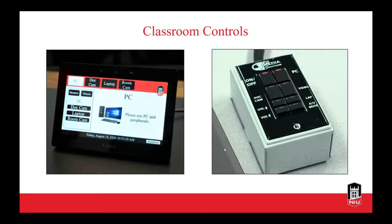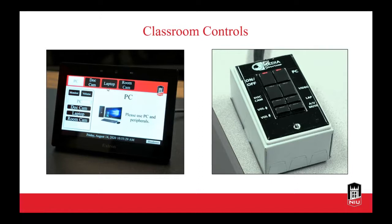In a typical classroom, many have a classroom control panel at the front instructor station. One style has an LCD display — a more upgraded room. The other still says 'media services' and has a physical button box. This is how you turn on the projector and change what's being sent to it. For example, clicking 'laptop' in the top row of buttons will project your connected laptop, while clicking 'doc cam' would put the document camera on the projector.